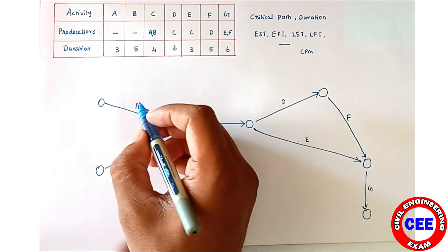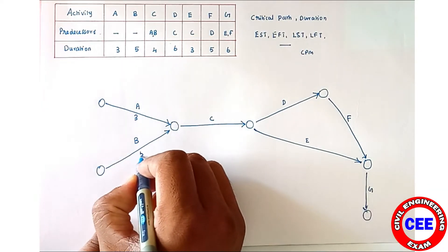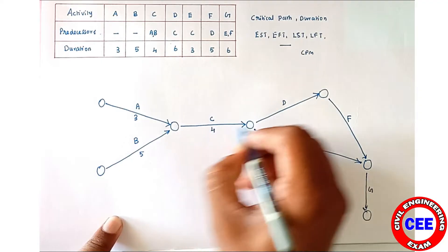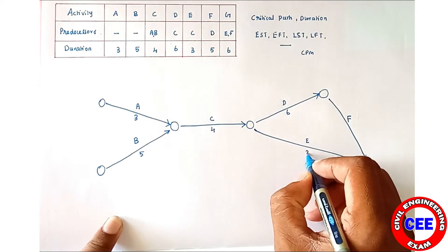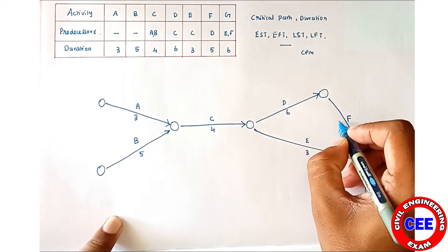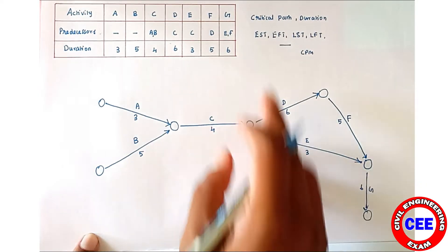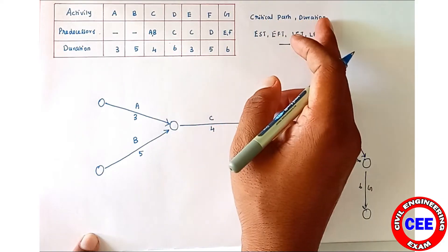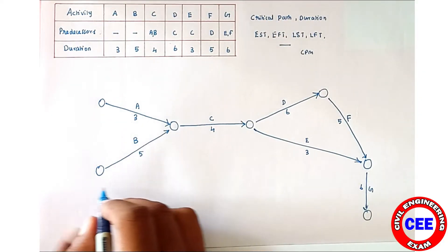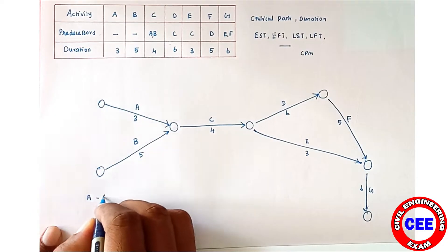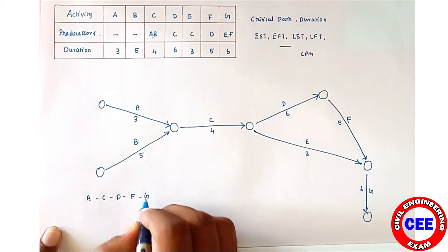We can write the corresponding durations: A is 3, B is 5, C is 4, D is 6, E is 3, F is 5, and G is 6. Now we have to find out the critical path and critical duration. We can write the paths. The first path is A–C–D–F–G.